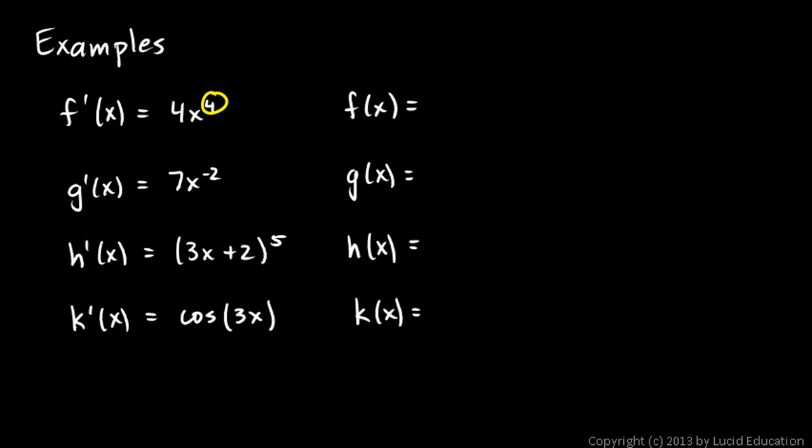Well, this is x to the fourth, so the function that has that as its derivative is going to be x to the fifth. But if we differentiate x^5, we don't get this. We get 5x^4. So in order to end up with 4x^4, I need to put a four-fifths here. And now you can see that if I differentiate this, I would have 5 times 4/5 x^4, and the fives would cancel, and I would be left with that.